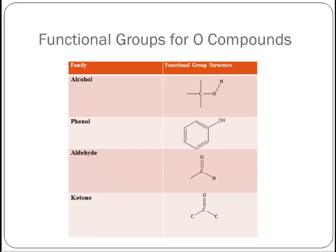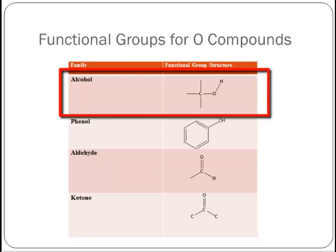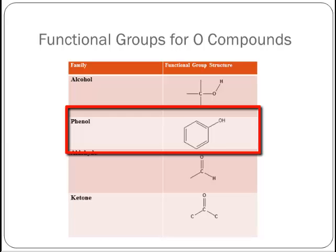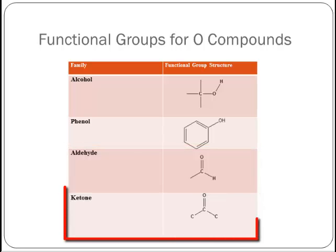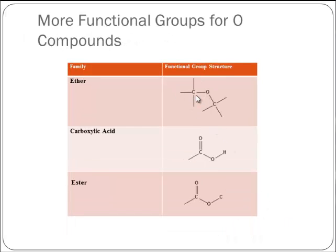There are a large number of functional groups which contain oxygen. Alcohol: C single bond O single bond H. Phenols are a special case of alcohol, with an OH bonded directly to one of the carbons of an aromatic ring — sometimes called aromatic alcohols, usually called phenols. Aldehyde: C double bond O, with an H on one side of the carbon. Ketone: C double bond O, with carbons on both sides of that carbonyl carbon. Ether: C single bond O single bond C. Ester is considered a derivative of carboxylic acid — same C double bond O grouping, but where a carboxylic acid has an H, an ester has additional carbons.